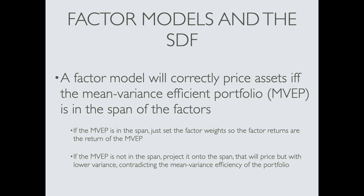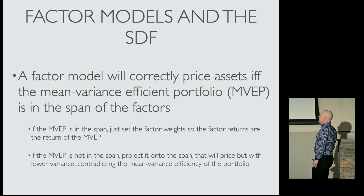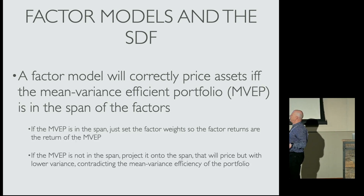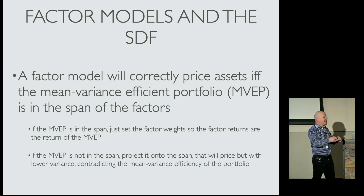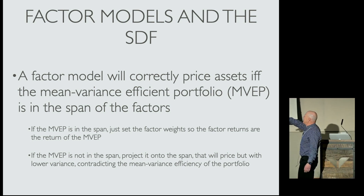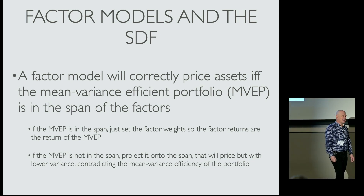Here is a result which, interestingly enough, I don't think has ever been derived. It's kind of obvious but it's never been derived. A factor model will price assets if and only if the mean-variance efficient portfolio — the SDF — is in the span of the factors. It's a pretty easy result to prove. The intuition: if the mean-variance efficient portfolio is in the span, just set the factor weights to the mean-variance efficient portfolio and it'll price. If it's not in the span, project onto the span — that will price — and it'll be a lower variance. So for factor models to work, the mean-variance efficient portfolio has to be in the span.